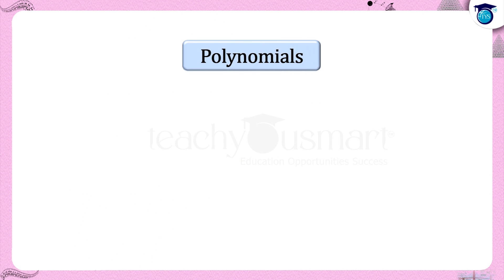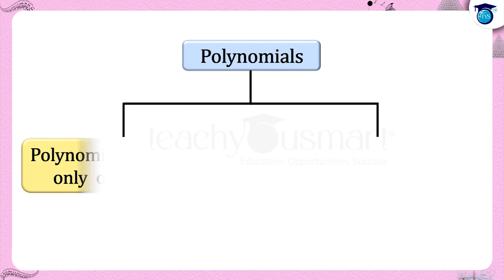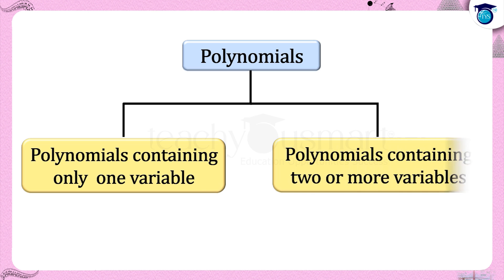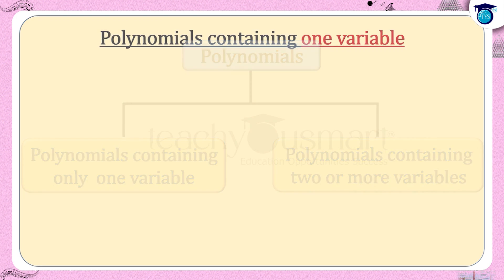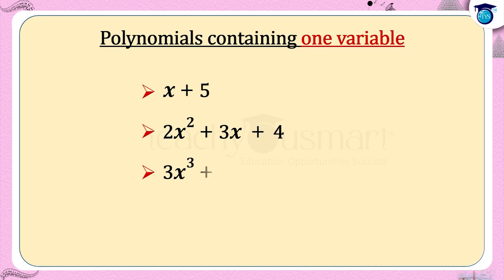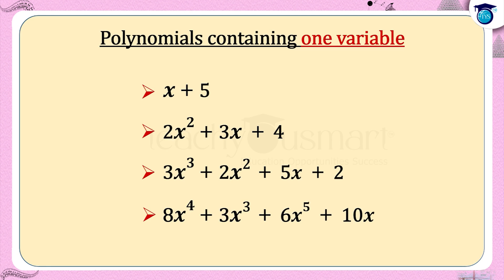Let us categorize polynomials into two groups: first, polynomials containing only one variable, and second, polynomials containing two or more variables. Some examples of polynomials containing one variable are: x + 5, 2x² + 3x + 4, 3x³ + 2x² + 5x + 2, and 8x⁴ + 3x³ + 6x⁵ + 10x. Let us take them one by one.